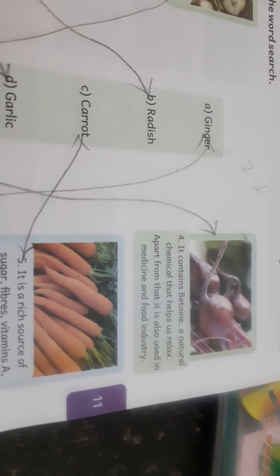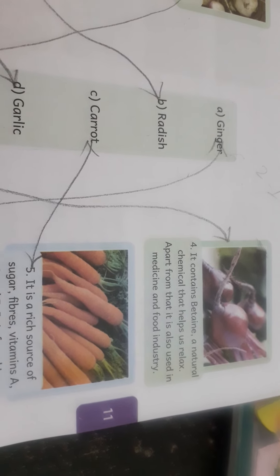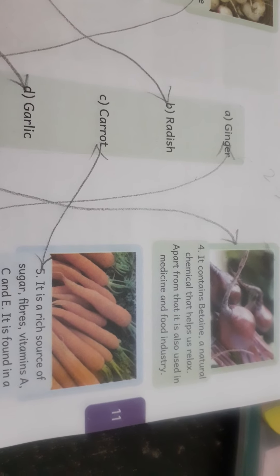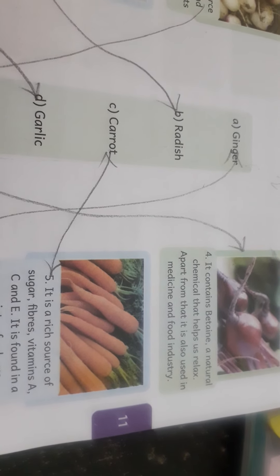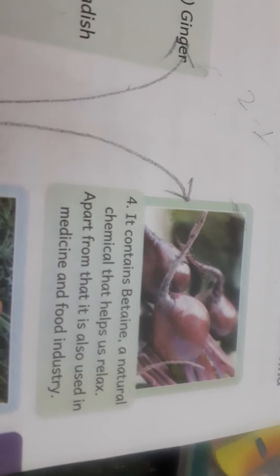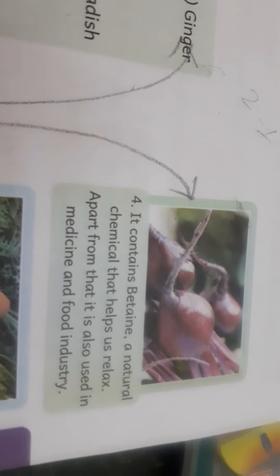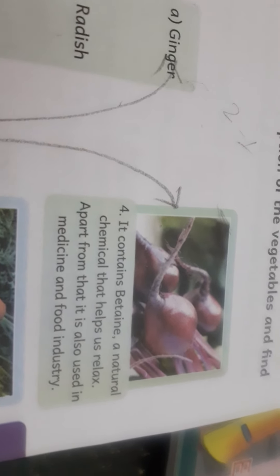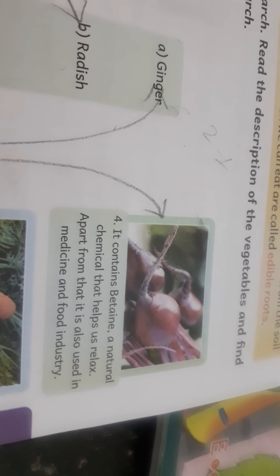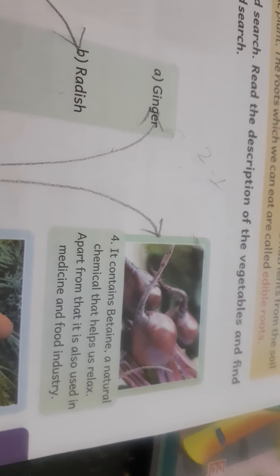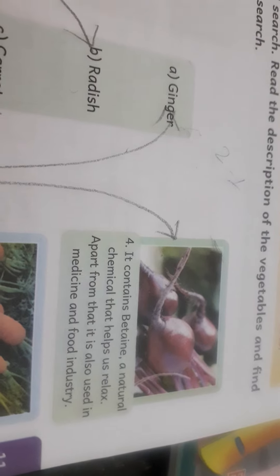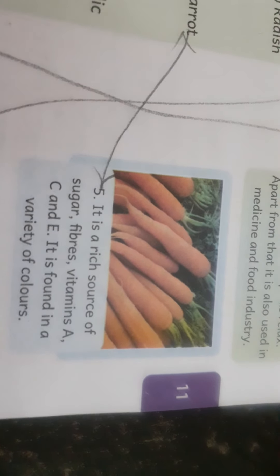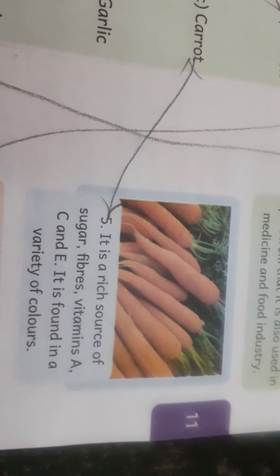Next is beetroot. It contains beta, a natural chemical that helps us relax. Apart from that, it is also used in medicine and food industries. You can see the picture of beetroot.